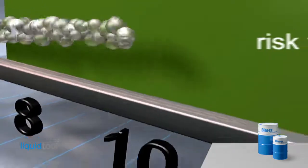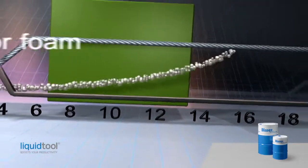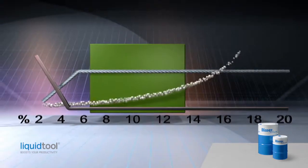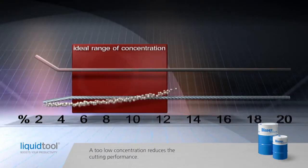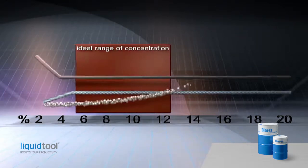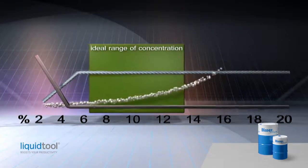It also affects foaming behavior and stability against external influences. If the emulsion concentration is too low, cutting performance is reduced and there is a greater risk of corrosion. A low concentration can also lead to bad odors or make the emulsion unstable.